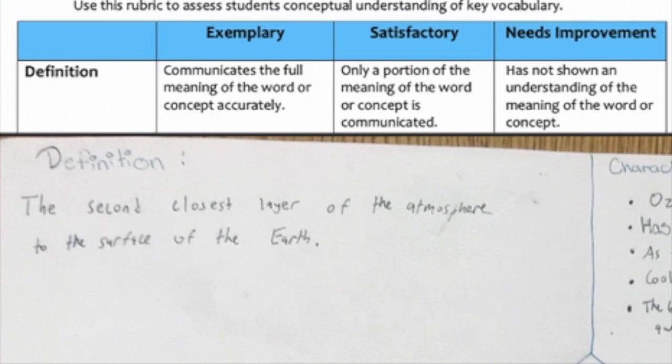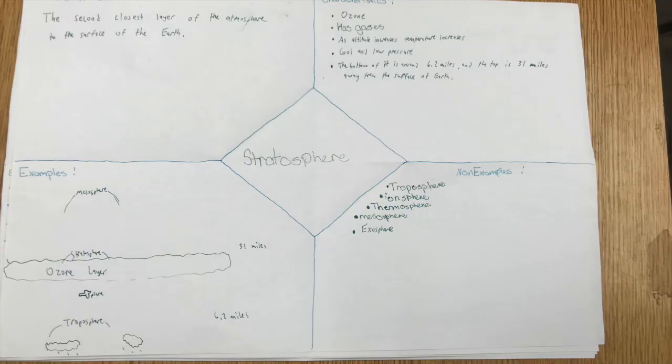Writing the definition as the last piece of the Frayer model should push the students to synthesize the other three sections. This level of analysis also increases their level of critical thinking.